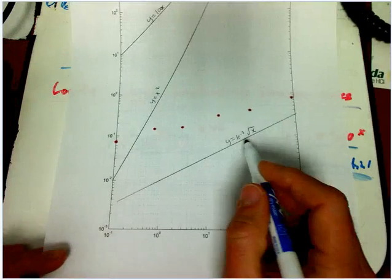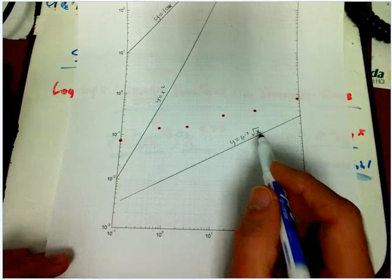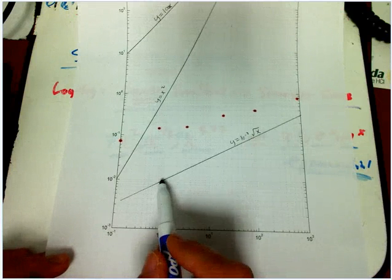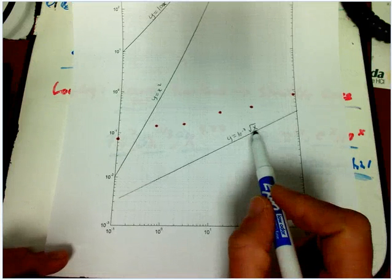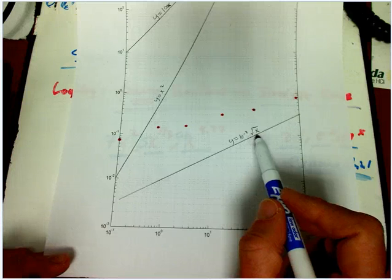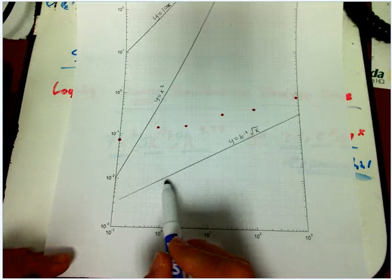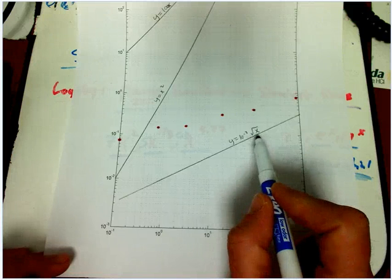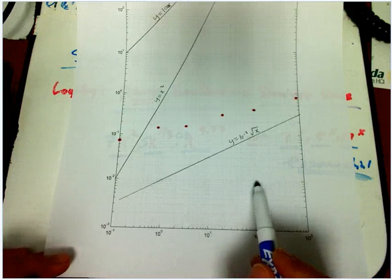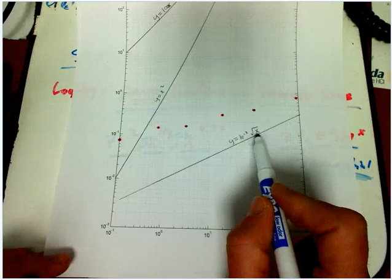Here's 10 to the minus two times root x. So one goes to 10 to the minus two. A hundred square root, you get 10 times 10 to the minus two, which is 10 to the minus one. Notice that if you go over two, you go up one, because every time x gets a factor of 100, the root x gets a factor of 10.